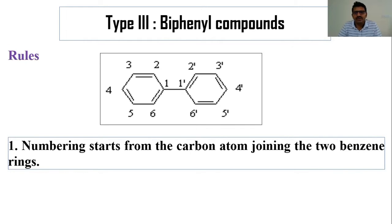Rule one says that numbering starts from the carbon atom joining the two benzene rings. As you can see, this is the carbon atom joining the two benzene rings, so you start numbering from this carbon atom. You can start from the left-hand side or right-hand side.